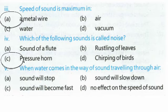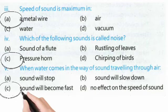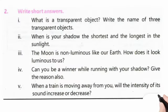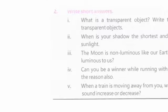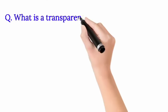Question 5: When water comes in the way of sound traveling through air — a) sound will stop, b) sound will slow down, c) sound will become fast, d) no effect on the speed of sound. Correct option is C — sound will become fast. Now Question 2: write short answers.